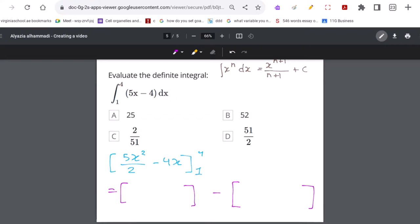This would be 5 times 4 to the power of 2 over 2 minus 4 times 4. For the second bracket, it will be 5 times 1 to the power of 2 over 2 minus 4 times 1.